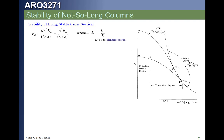A couple lectures ago we proposed that if we could transition from the Euler allowable curve to the block compression short slenderness ratio allowable — which for the shortest sections will be FCU, and for slightly longer but still very short sections would be crippling — we proposed a nice smooth transition. Let's take a look at that.